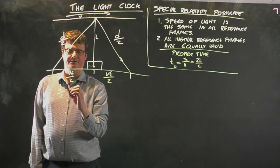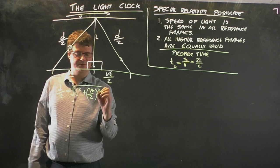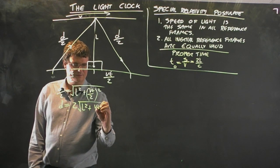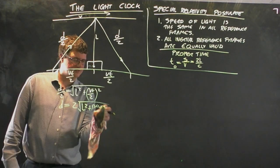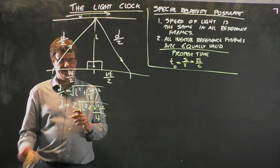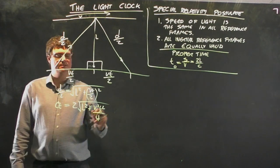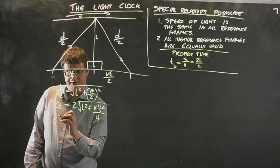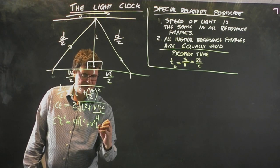Now I can do some Pythagoras to find out D in terms of L and Vt on 2. I can say D on 2 is equal to the square root of L squared plus Vt on 2 squared. D is equal to 2 lots of all of this stuff. I can expand these brackets out so I can get V squared T squared on 4. D is equal to Ct.